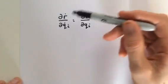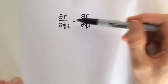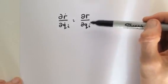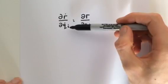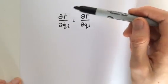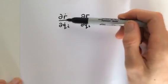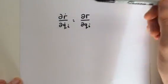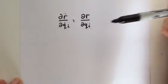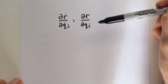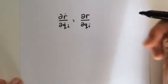Today we're going to prove the cancellation of dots. This basically says that the partial derivative of r dot with respect to q dot is equal to the partial derivative of r with respect to q. The partial derivative of velocities is equal to the partial derivative of displacements — you just cancel out the dots. So we're going to prove that.